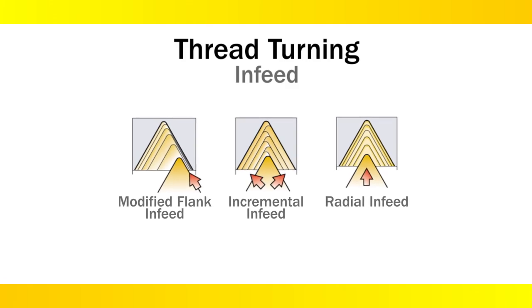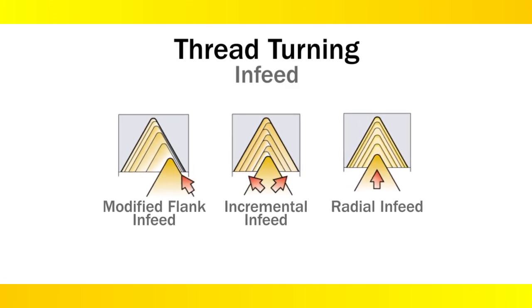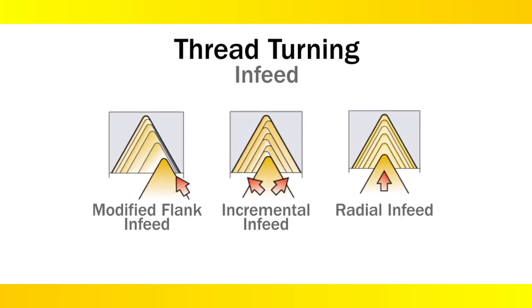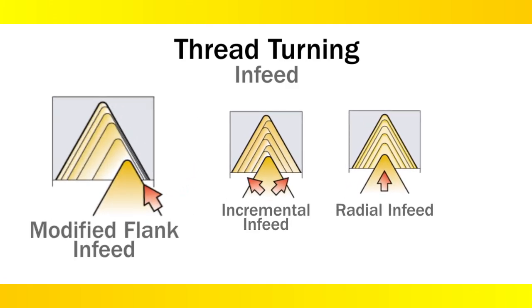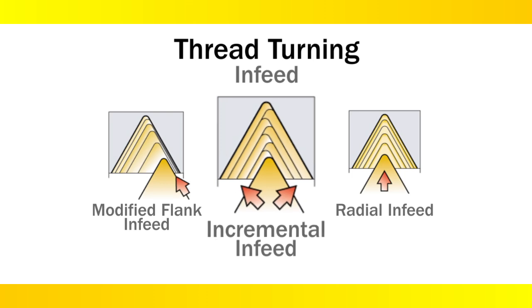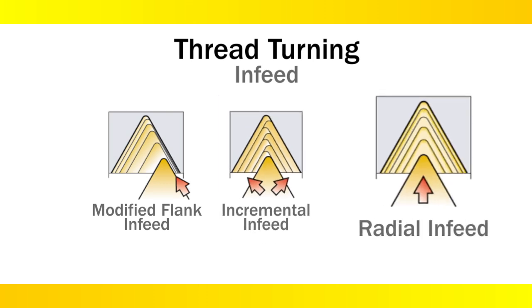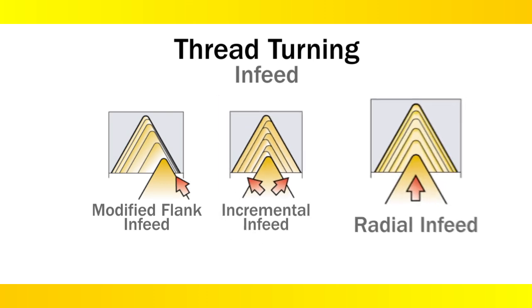Thread turning has three primary programming infeed methods: modified flank infeed, incremental infeed, and radial infeed.